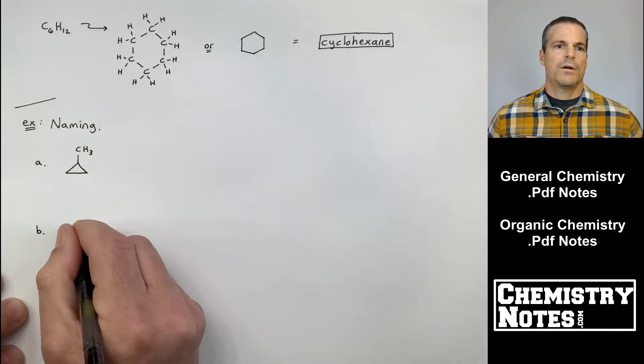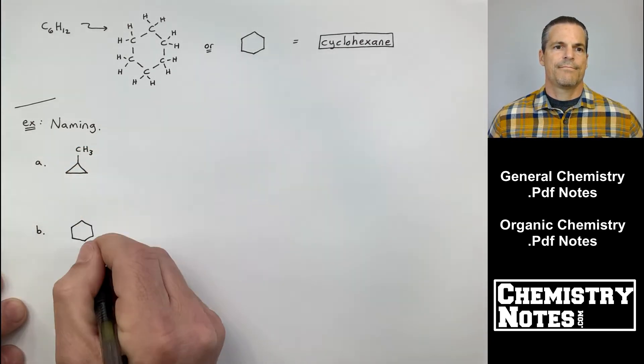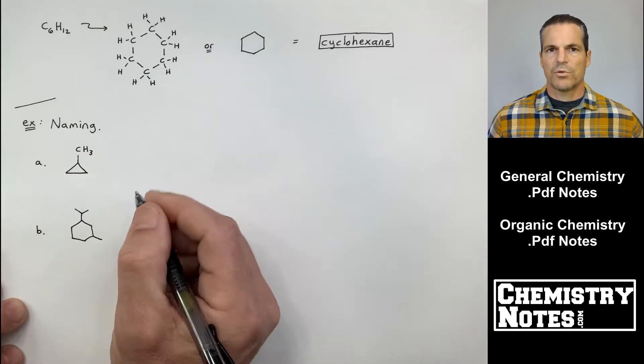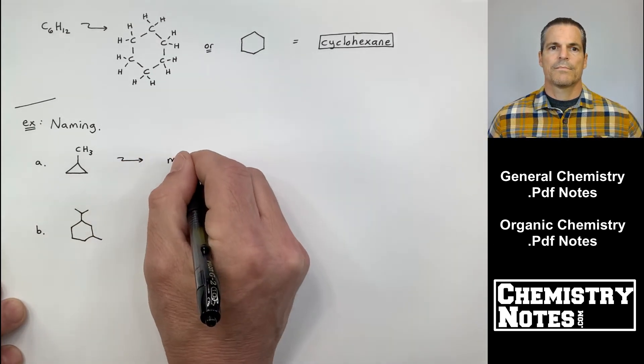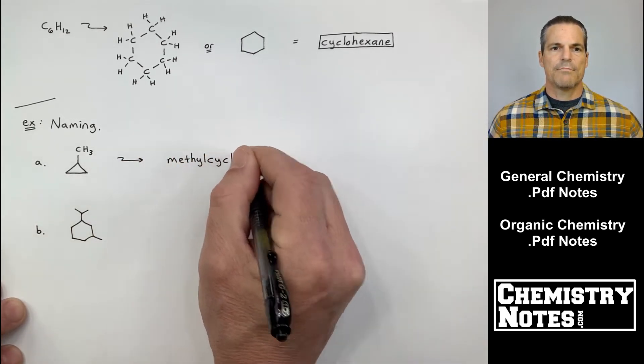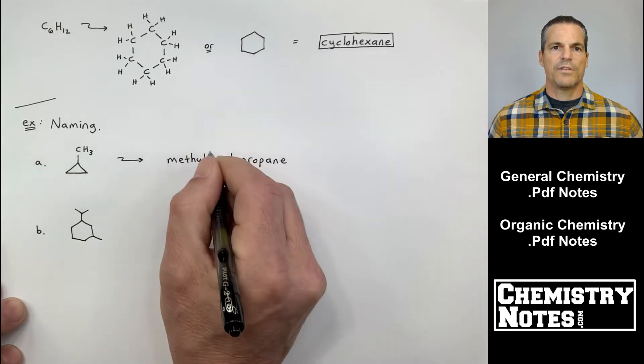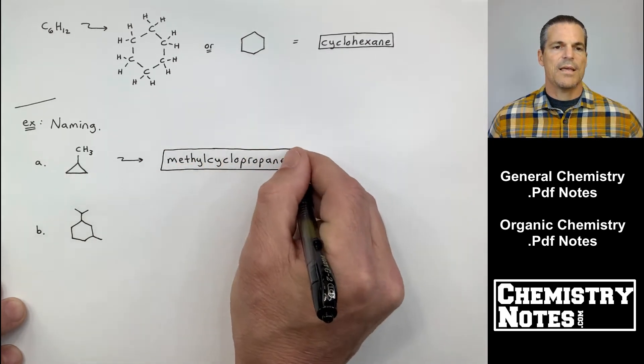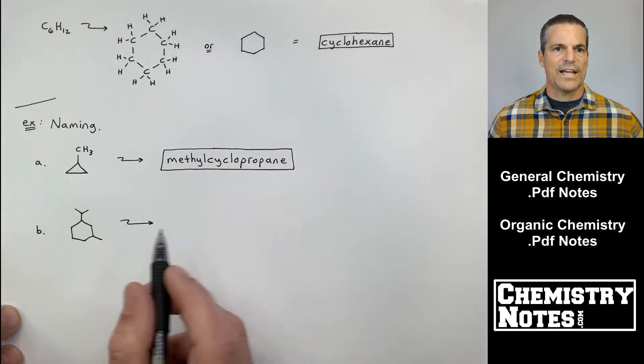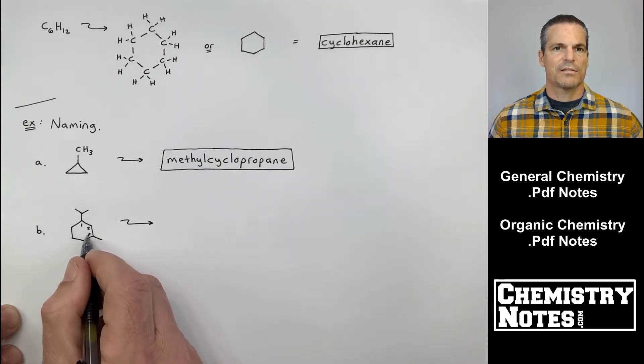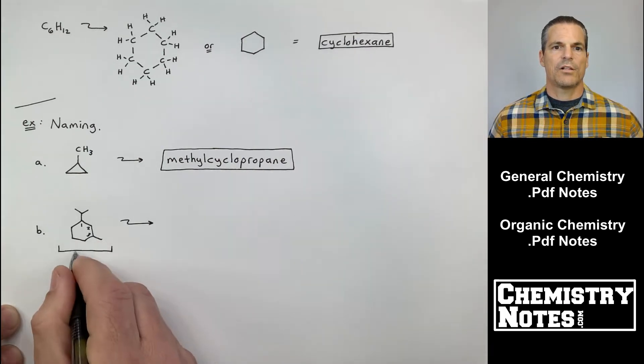So how do we name these guys? Well, I've got A and B here. So A is going to be some sort of cyclopropane. And you'd be right if you guessed methyl cyclopropane, two things. It's one word. And I don't have to call it one-methyl because it's understood that that's on carbon one, methyl cyclopropane.